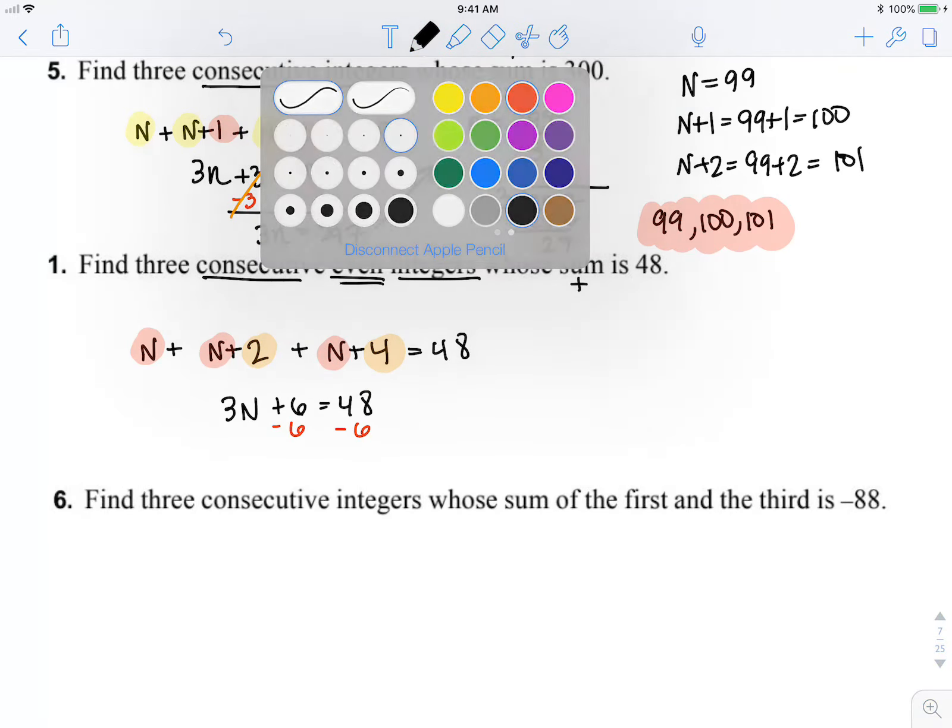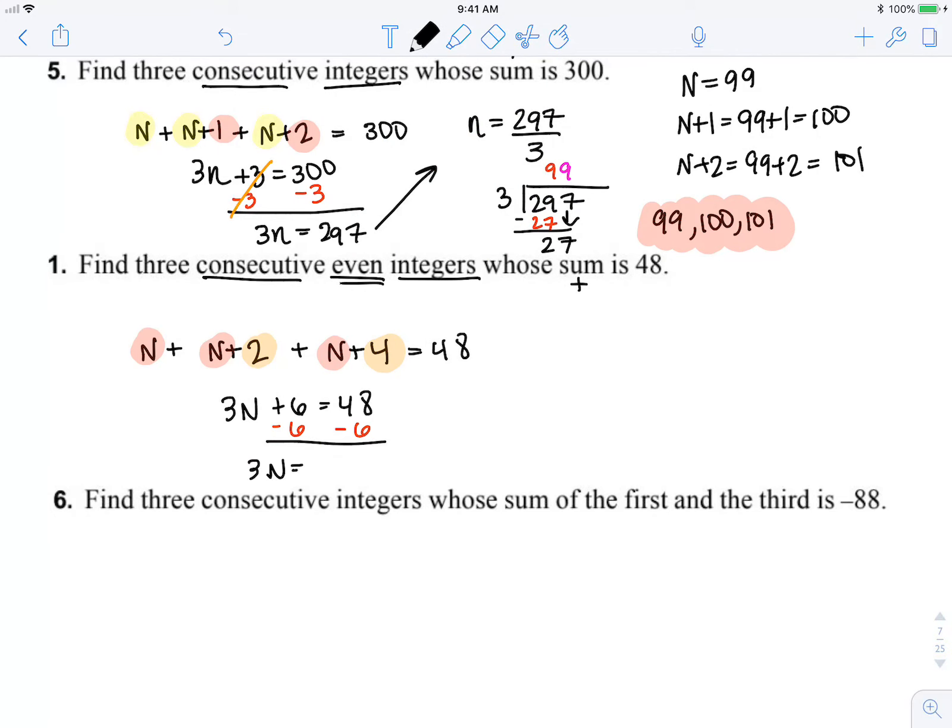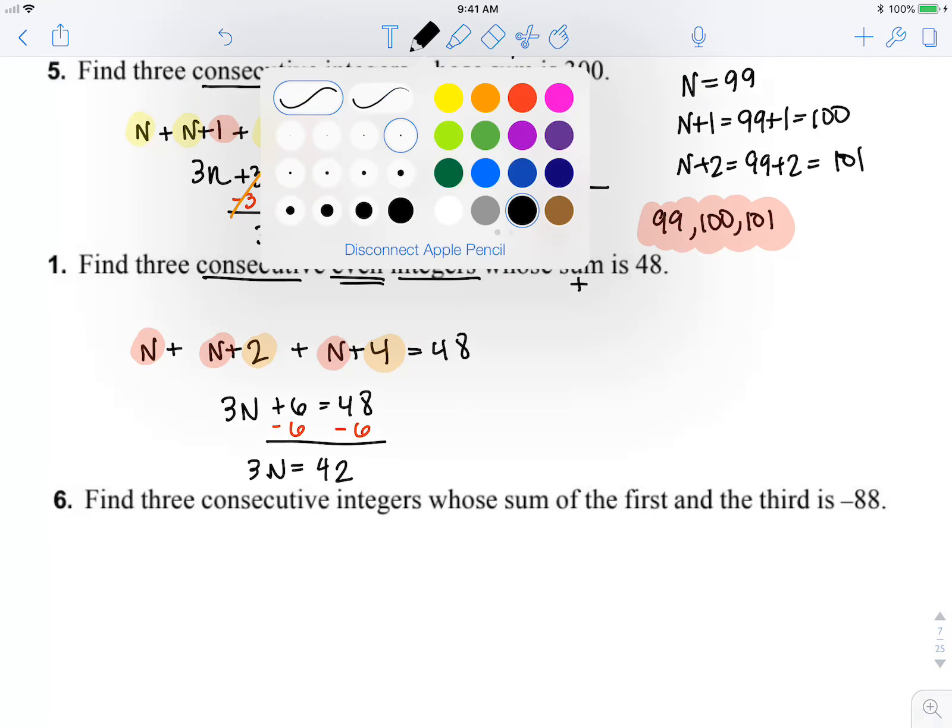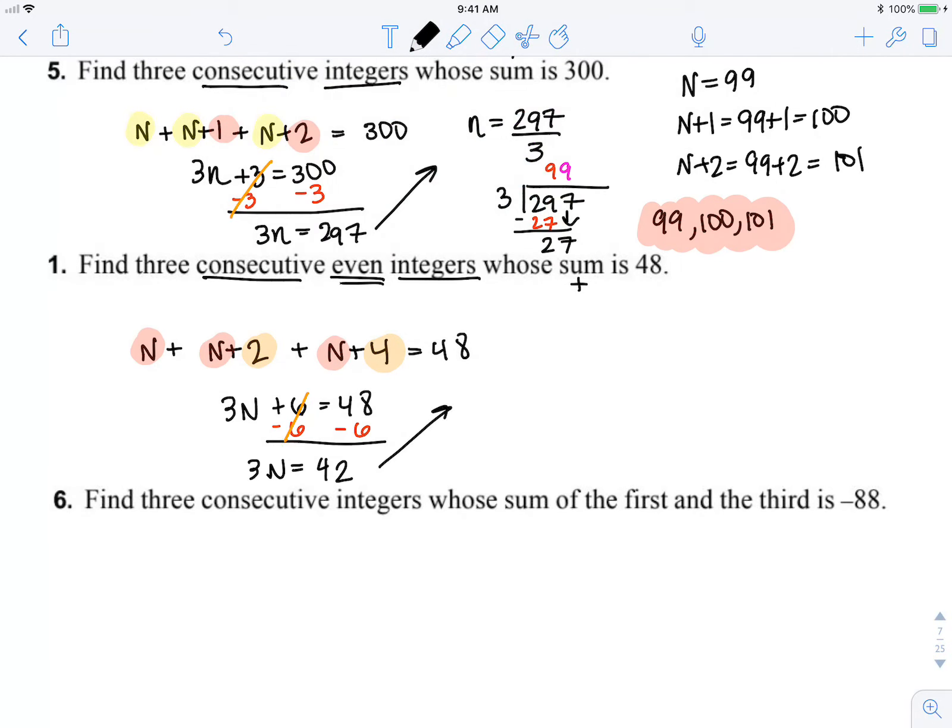6 first to isolate 3n equals 42. 6 minus 6 cancels, so to isolate n, n equals 42 divided...